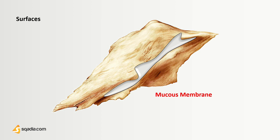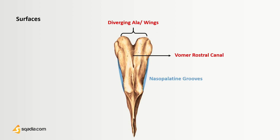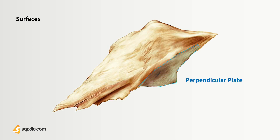There are markings like furrows showing the passage of blood vessels. On either side of the deep midline furrow, called the Vomer rostral canal, the alae or wings are present on the superior surface of the Vomer. The alae are the thickest part of this bone and are tightly apposed to the sphenoid bone. The nasopalatine grooves run anterior-inferiorly on both sides of the alae.